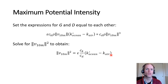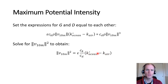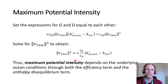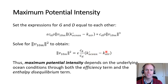This is why sea surface temperature is so crucial to tropical cyclone intensification. Higher SST leads to greater saturation specific enthalpy, a greater enthalpy difference, and typically greater efficiency in converting that energy to kinetic energy. In summary, maximum potential intensity depends on underlying ocean conditions through the efficiency term epsilon and the enthalpy disequilibrium — the difference between the ocean's saturation specific enthalpy and the specific enthalpy of the overlying air.